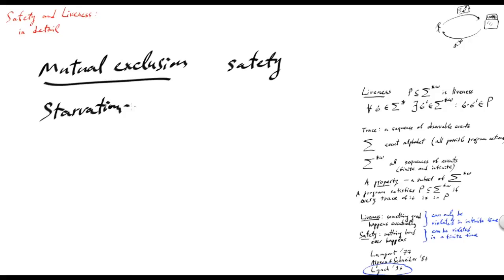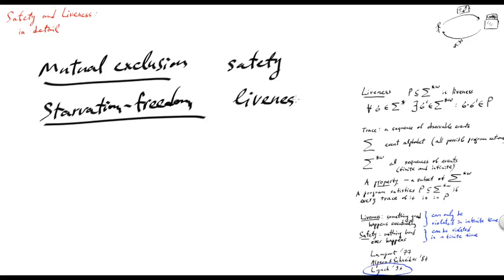Intuitively, the starvation freedom property — which says that provided no process stays in its critical section forever, every process in the trying section would eventually get into the critical section — is a liveness property, because in any configuration there is always a chance that the process gets into its critical section.